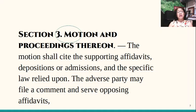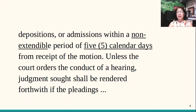Let's go to Section 3: Motion and Proceedings Thereof. There must be a motion for summary judgment. The motion shall cite the supporting affidavits, depositions, or admissions, and the specific law that the moving party relies upon to obtain judgment in his favor. The adverse party may file a comment and serve opposing affidavits, depositions, or admissions. The timetable is a non-extendable period of five calendar days from the time he receives the motion. The court does not need to issue an order setting the deadline — it must be five calendar days from receipt of the motion.